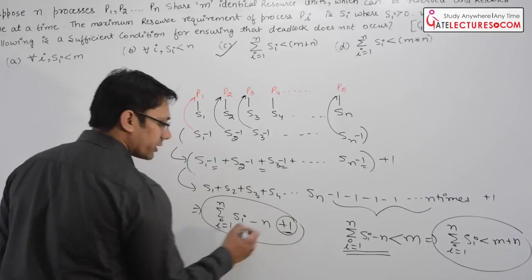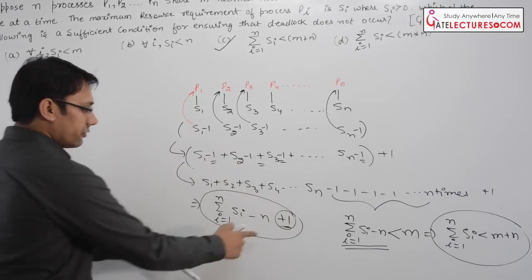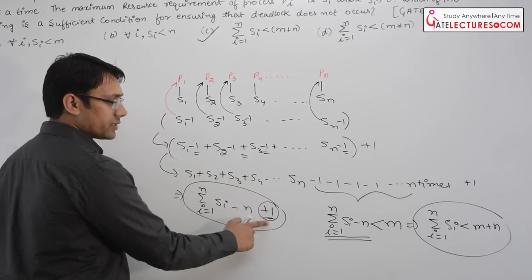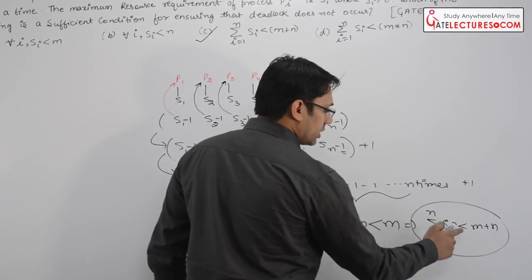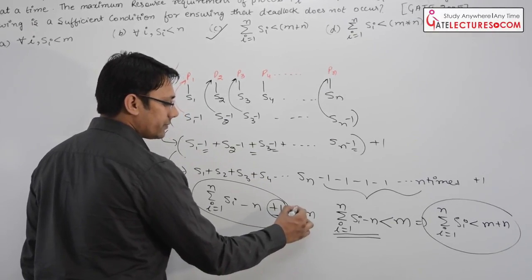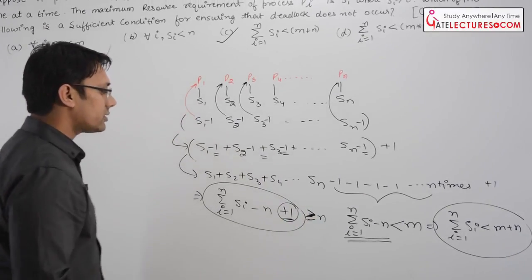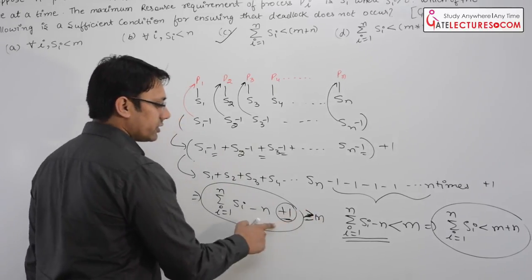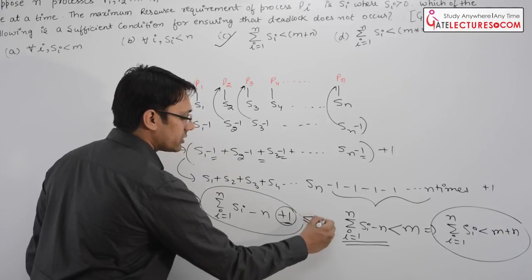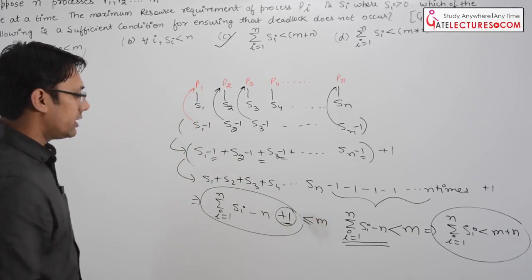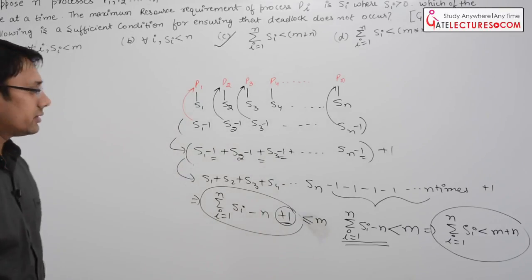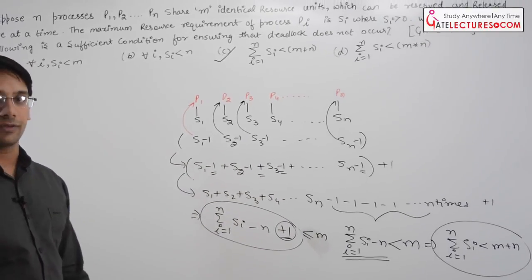To summarize: if m is greater than or equal to (Σ Si) − n + 1, or equivalently Σ Si < m + n, then deadlock will not occur. These two conditions are the same. This was the GATE 2005 question on deadlock-free resource allocation.